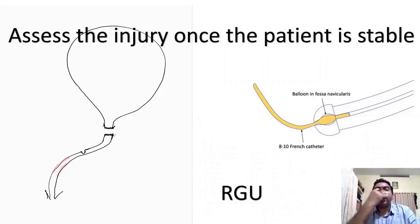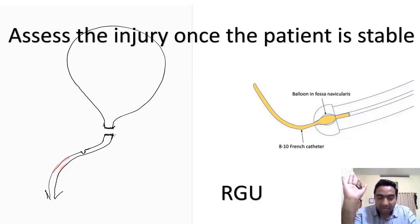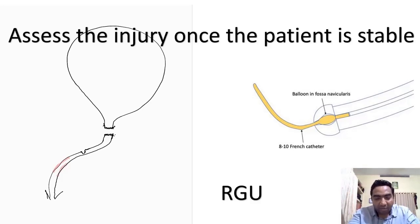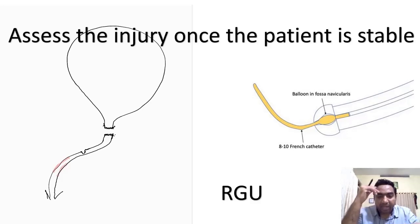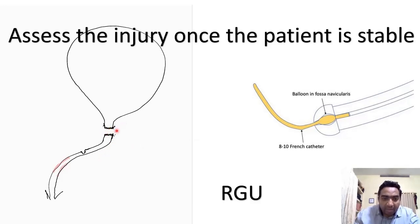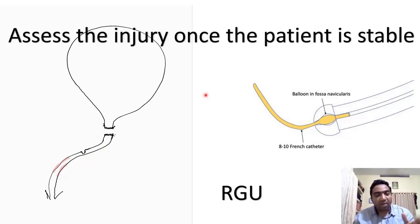Once the patient is stable — these patients generally have pelvic fractures, hypotension, and polytrauma with possible abdominal injury — we assess the injury. It can be a complete rupture, a partial rupture, or even just a contusion of the urethral wall without any disruption.